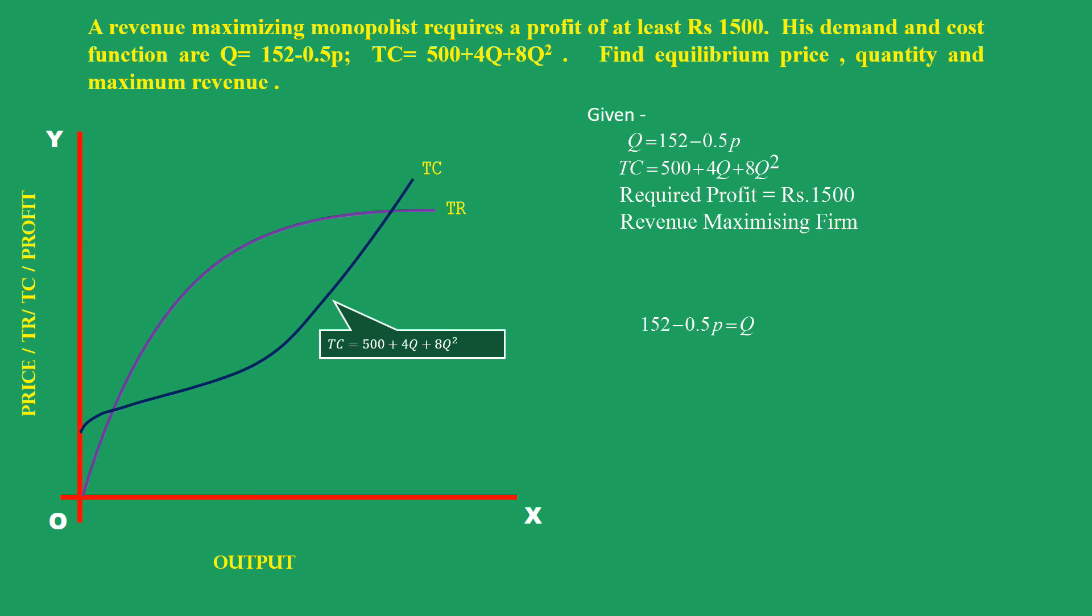Solve the demand function for p: P = q/(-0.5) - 152/(-0.5). On simplifying, we get P = -2q + 304.